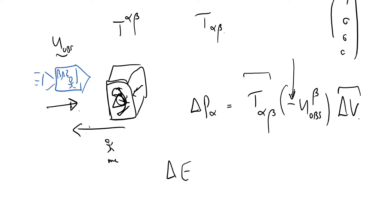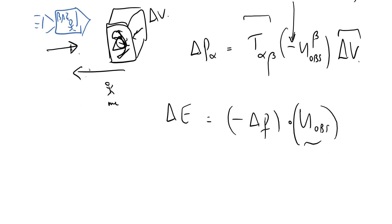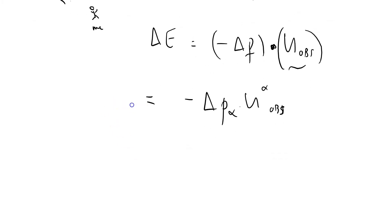It's just a special case of the stress-energy tensor definition. If I want to work out what Baz sees as the total energy in this little control volume ΔV, that equals minus the momentum dotted with the observer's speed. That's a standard result from special relativity that we covered — let's write it out in tensor notation: it's minus δp^α times u_α_obs. That's momentum dotted with speed, with one index up and one index down, so we can sum over it.